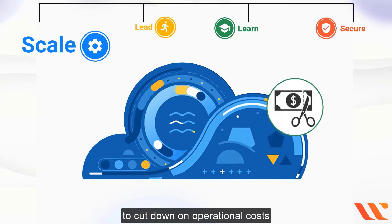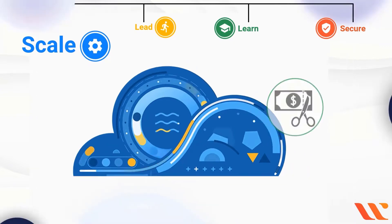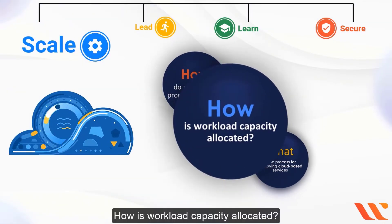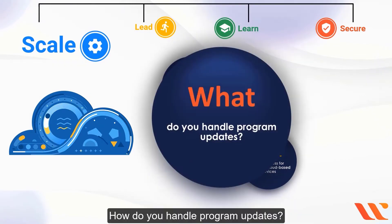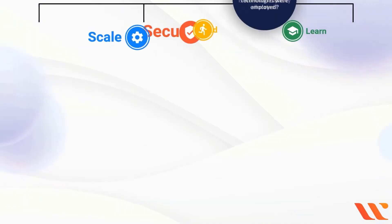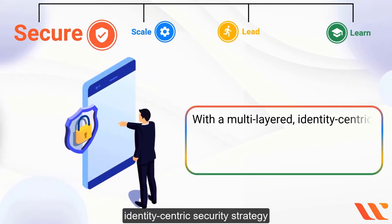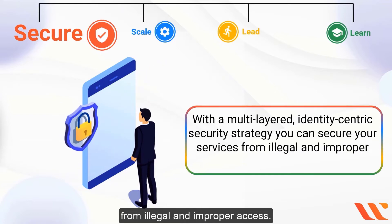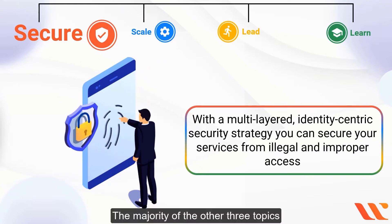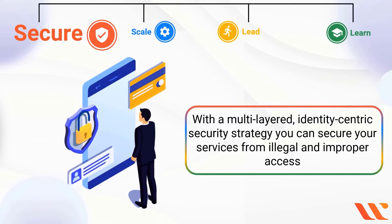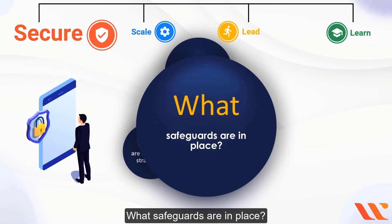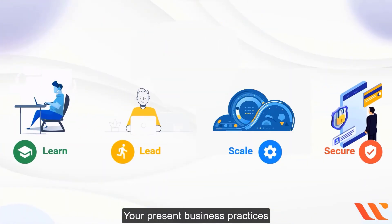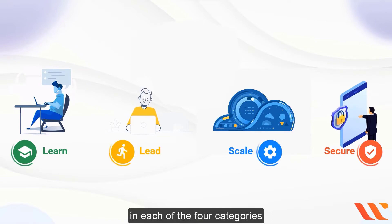For Scale: consider how much you utilize cloud-native services to cut operational costs and automate manual procedures. What is the process for deploying cloud-based services? How is workload capacity allocated and how do you handle program updates? For Secure: with a multi-layered, identity-centric security strategy, you can protect your services from illegal and improper access. What safeguards, technologies, and overall strategies are in place?